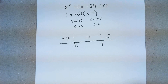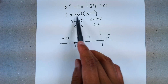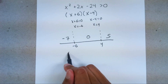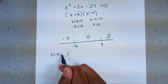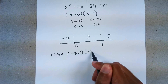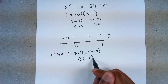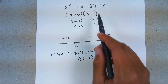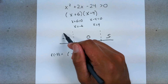To figure out if it's going to give me a value greater than zero, I have to plug in these values into my factored form — it's easier that way. So plugging in −7: that equals (−7 + 6)(−7 − 4) = (−1)(−11) = positive 11. Now ask yourself: is that what we're looking for? Are we looking for a value greater than zero? Yes — 11 is greater than zero, so this gets a check mark.